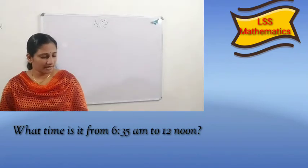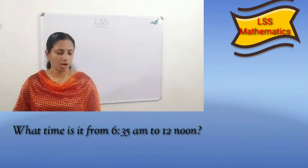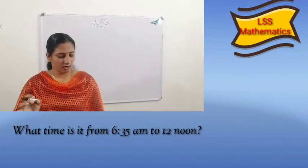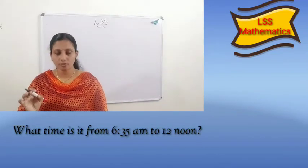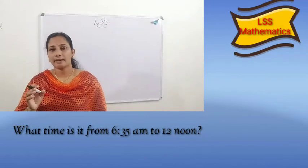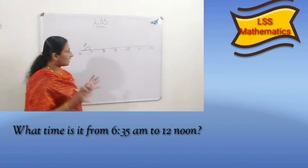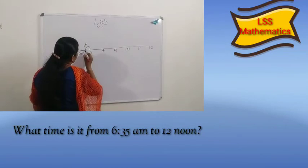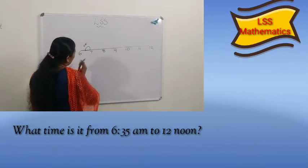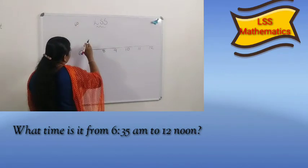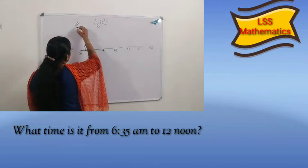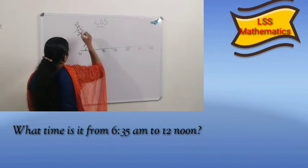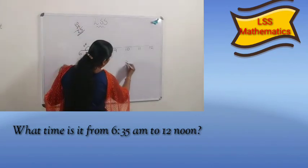The next question: what time is it from 6:35 to 12 noon? Using the timeline, let's find the answer. Here, 6:35 to 12 noon. First, let's find the minutes. From 6:35 to 7 o'clock — total minutes is 60. So 60 minus 35 gives 25 minutes.